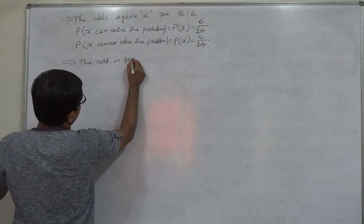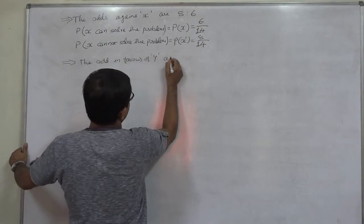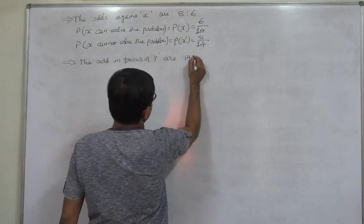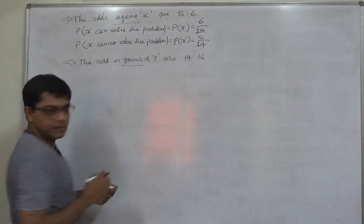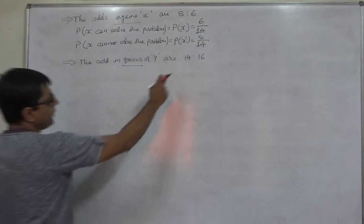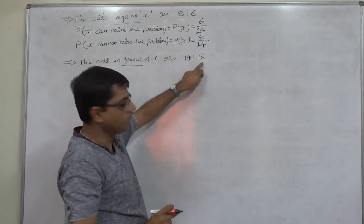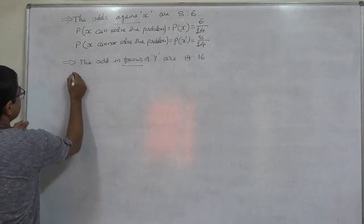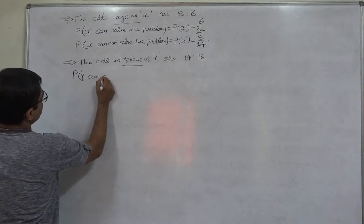Now the wording is 'the odds in favor of Y' — 14 is to 16 — instead of 'against.' So when the wording says 'in favor of Y,' the first number is in favor of success and the second number is against success, i.e., for the complement event. Therefore, P(Y), the probability that Y can solve the problem, equals 14 divided by 30.